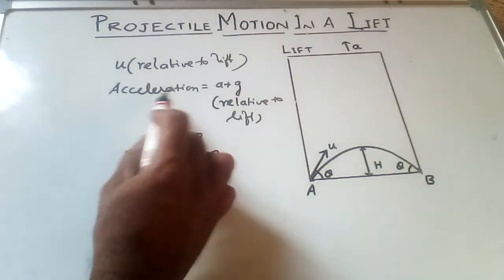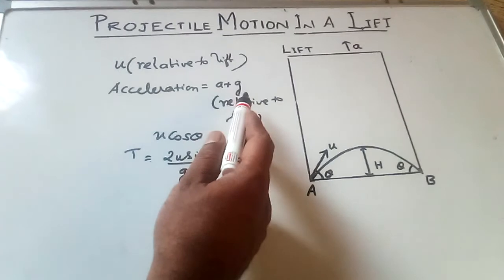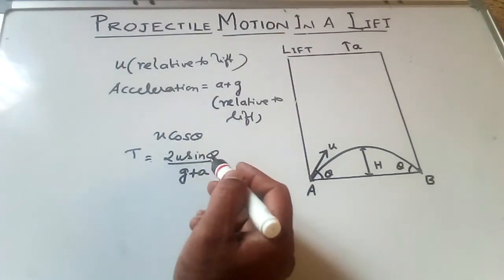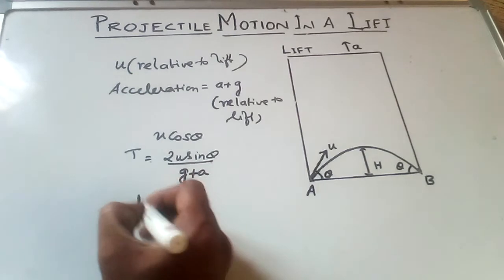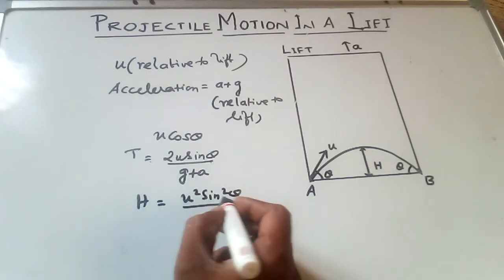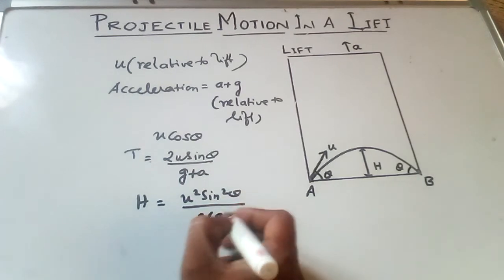Because acceleration is equal to A plus G, so that time of flight is equal to U sin theta by G plus A. And the maximum height H is equal to U square sin square theta by 2 into G plus A.